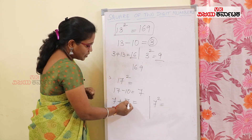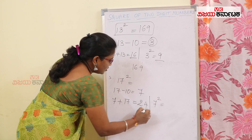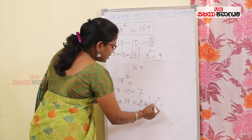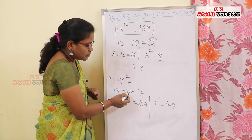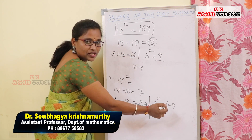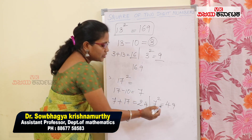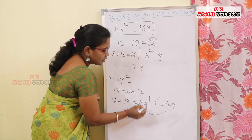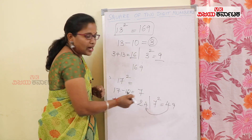Now look at this: 17 plus 7 is 24. And 7 squared is 49. This base is 10, which is 2 digits. So I have 2 digits in this unit place. I use this 2nd digit.